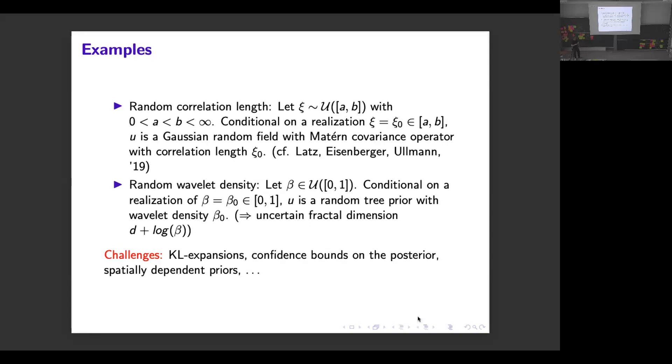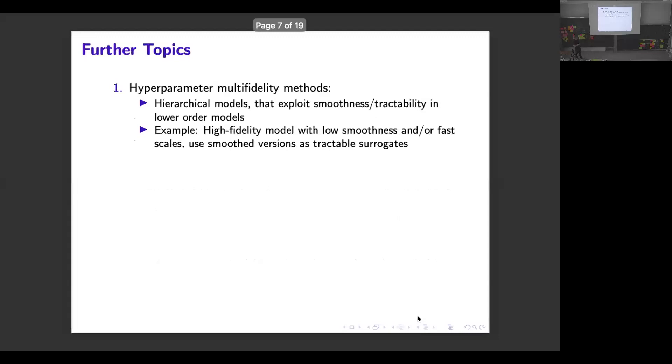I mean, with the KL expansion it really depends on the representation of your field. For instance, you wouldn't have this problem for a piecewise prior or some other wavelet-based prior. However, other problems arise, for instance the amount of work in each sample changes because this wavelet density beta is random. But this was just one topic.